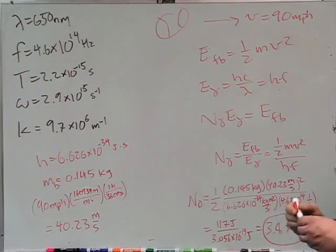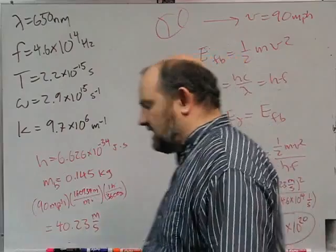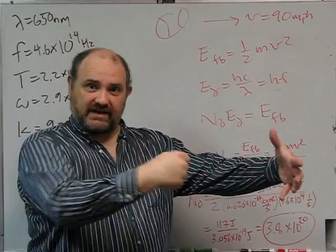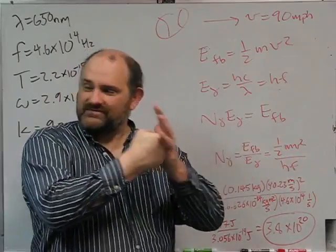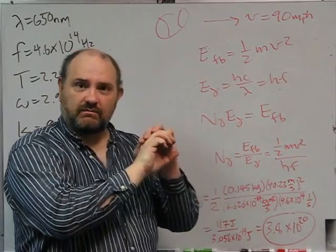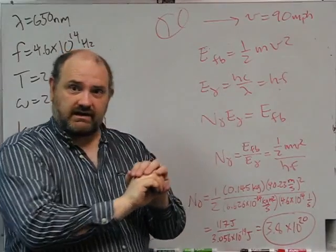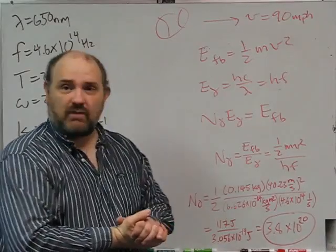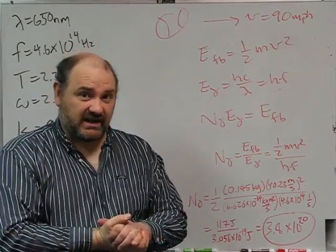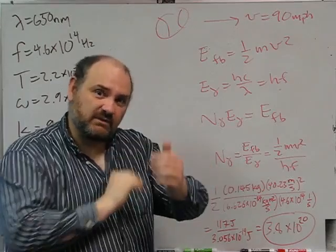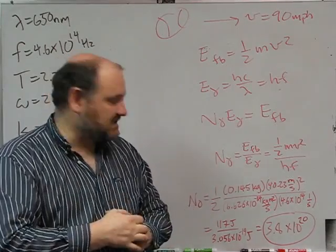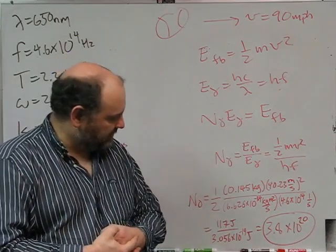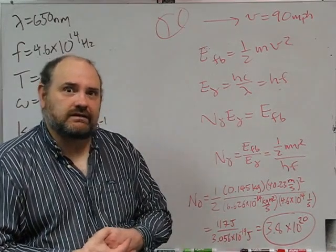Dividing the fastball energy by the photon energy: n_γ = 117 J / (3.056×10⁻¹⁹ J) = 3.8×10²⁰ photons. So if a magic box stopped a 90 mph fastball and converted all that kinetic energy into a pulse of red light, it would produce about 3.8×10²⁰ red photons — roughly 100 joules in one direction, comparable to a 100-watt bulb running for one second.